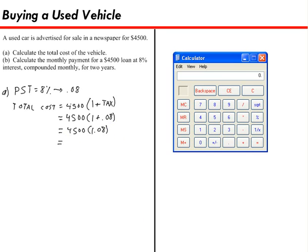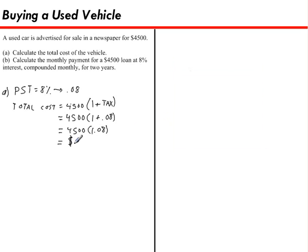I'll just bring in my calculator and I'll enter in what I see there: 4,500 times 1.08 and then I hit equals, and there's the total cost of the car, $4,860. There's our answer for A.